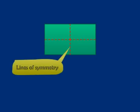Look at the rectangle on the screen. Let me now draw two lines there. Look at these two lines. These two lines are the lines of symmetry of the rectangle.